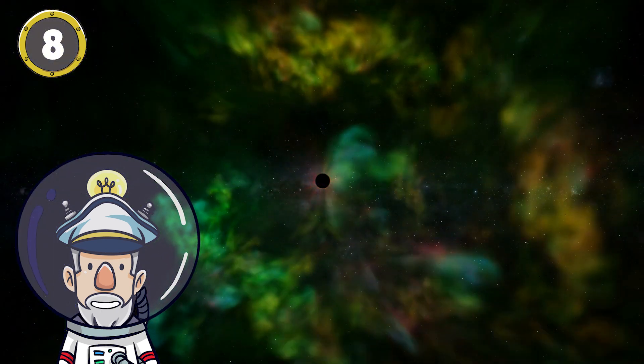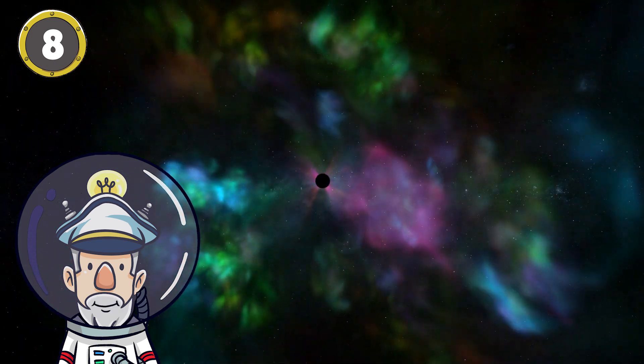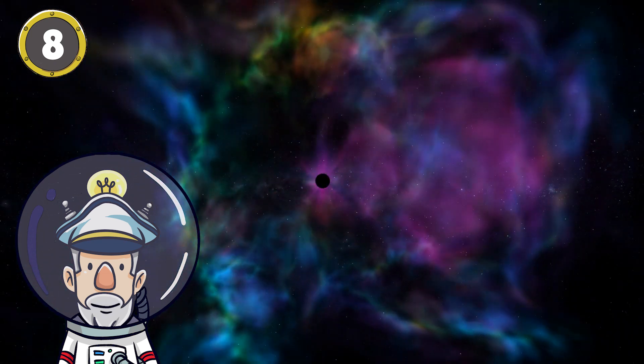Number 8: Scientists cannot directly see black holes. They have to look at the objects being pulled around the holes that show up as different colors.